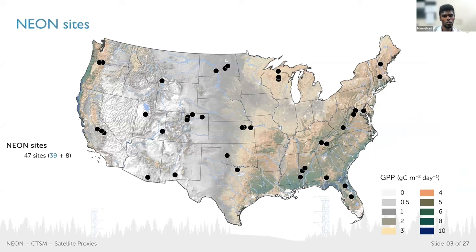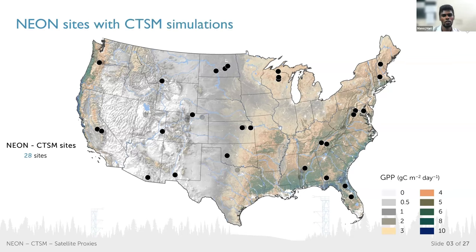When it comes to the NEON sites, our focus is mostly confined to the contiguous US, where NEON has around 47 sites — 39 in the lower 48, and 8 in Alaska, Hawaii, and other islands. For this analysis, we selected 28 sites highlighted here, which have consistent data flow and CTSM simulations enabled. The background image shows the high-resolution CTSM simulations averaged over the whole analysis period.